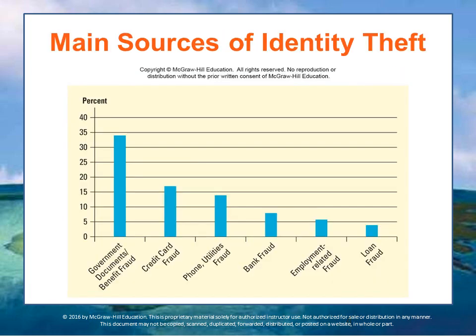Here are some of the main sources of identity theft: government documents and benefits fraud, credit card fraud, utility fraud such as phones, bank fraud, employment fraud, and loan fraud — these different kinds of things that can affect us since there's so much personal information out there. And since this is all so new, many of the protections haven't yet been built into the system.